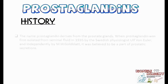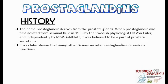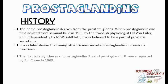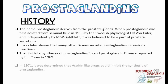Let's start with its history. The name prostaglandin derives from the prostate glands. When prostaglandin was first isolated from seminal fluid in 1935 by the Swedish physiologist Ulf von Euler, and independently by M.W. Goldbart, it was believed to be a part of prostatic secretions. It was later shown that many other tissues secrete prostaglandins for various functions. The first total syntheses of prostaglandin F2-alpha and prostaglandin E2 were reported by E.J. Corey in 1969.